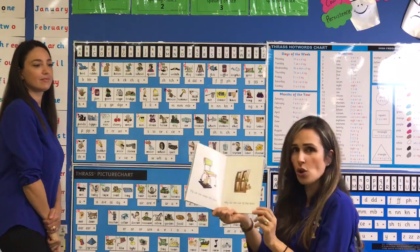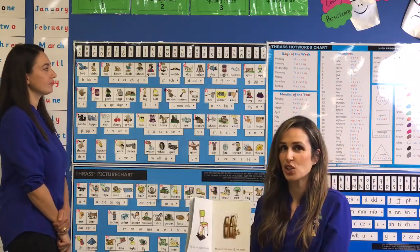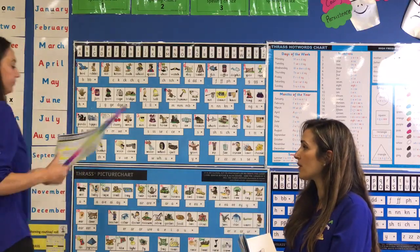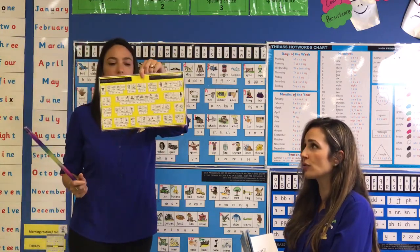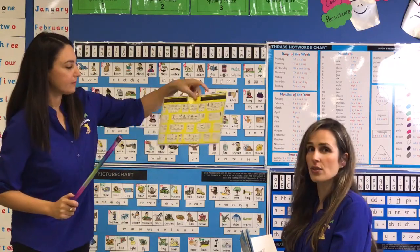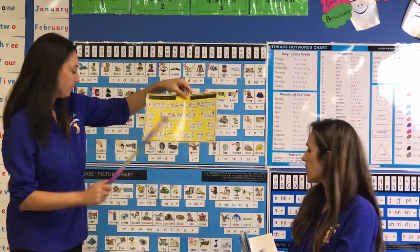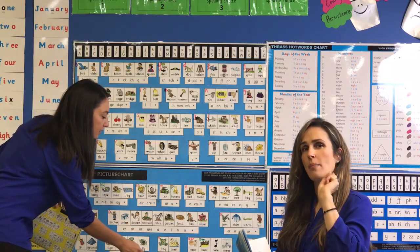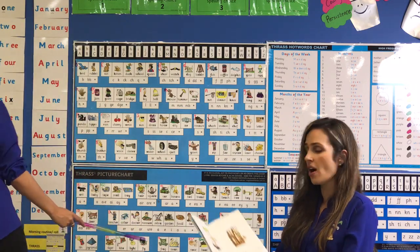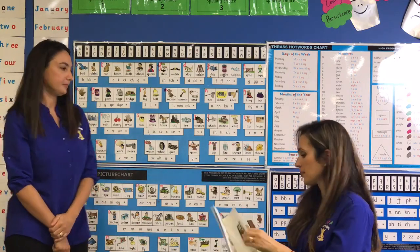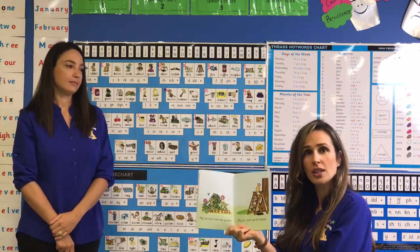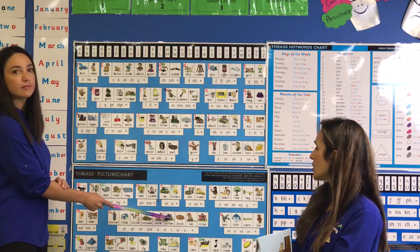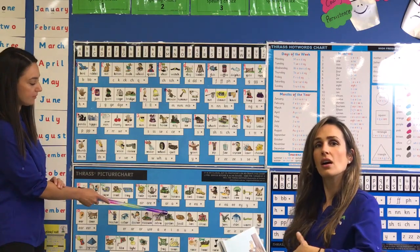My cat ran out of the door. Now 'door' is on our Thrass chart, but 'door' is on the vowel side, so if you flip your chart you'll find the flap. Flip it — don't turn it, you flip it — and you will see the vowels. It's in our very last row, the OR box, and in the word 'door' we actually have a tri-graph, three letters making one sound, and those three letters are O-O-R. My cat went into the garden, and 'garden' is on the vowel side — it's in the schwa box, and in the word 'garden' the E makes the uh sound.